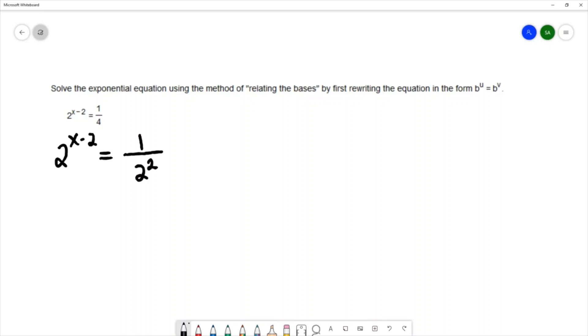And then I'm going to apply a property of negative exponents which allows me to move this factor to the numerator, so this becomes 2 to the negative 2. On the left we're leaving it the same again, so now we've written it to have the same base on both sides of the equation.